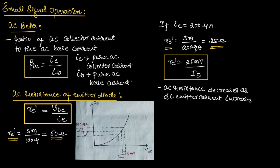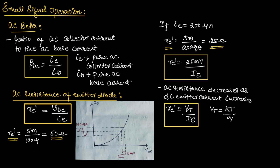There is one more formula for AC resistance of the emitter diode: RE' equals VT divided by IE, where VT equals KT divided by Q. Here K is Boltzmann's constant, T is the temperature in Kelvin, and Q is the charge of an electron.